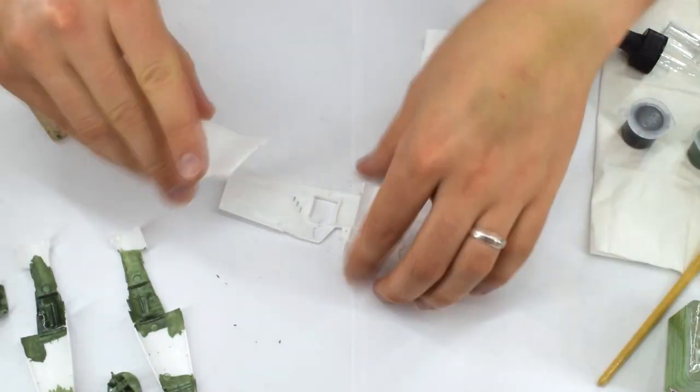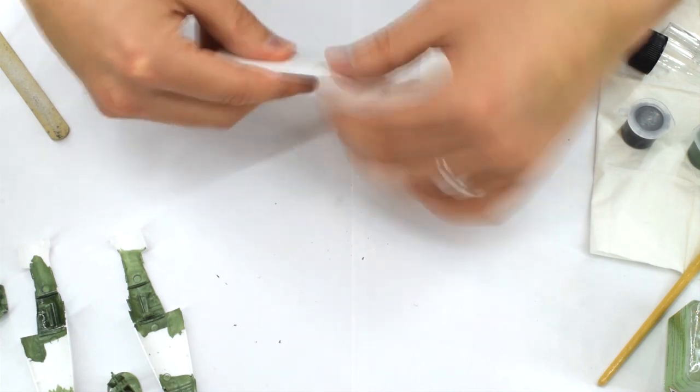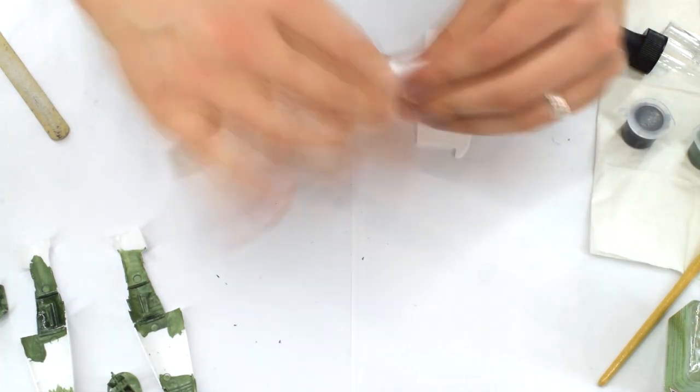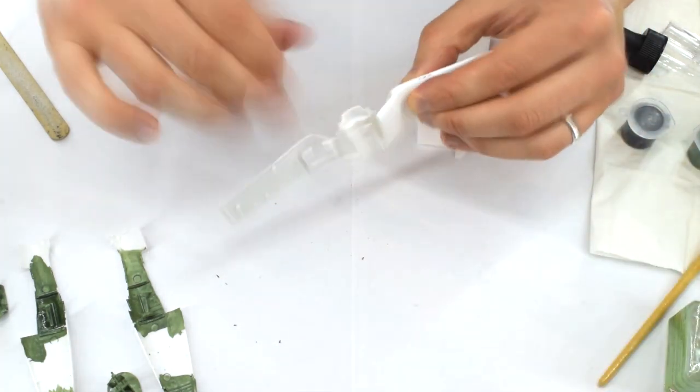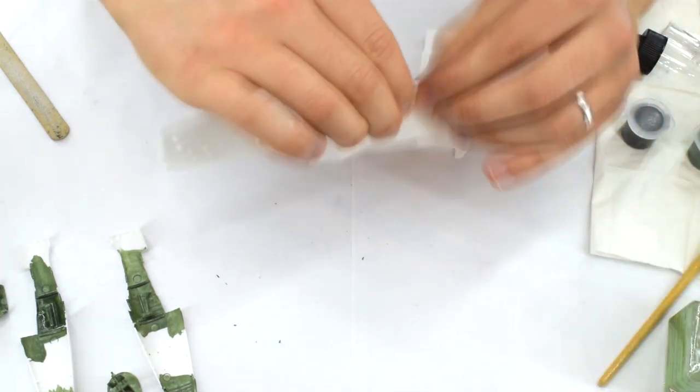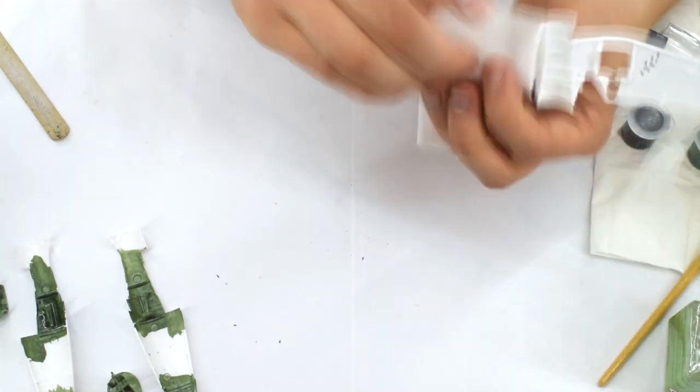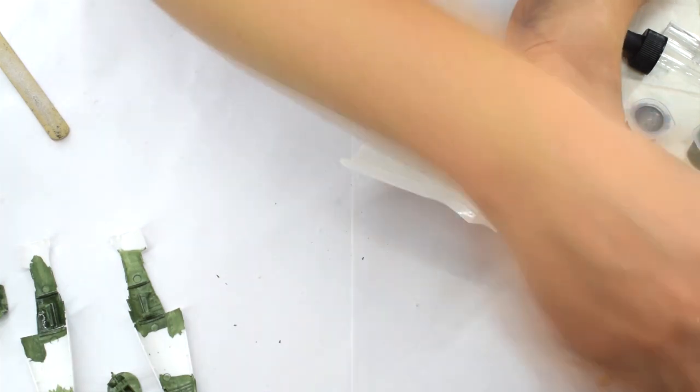Whilst the paint was drying, the wing halves were cemented together. The fit was quite good, but they did need to be held together until the cement had set to prevent them from coming apart, as there was a slight tendency for them to bend away from each other.